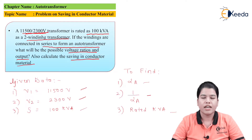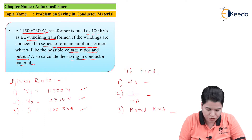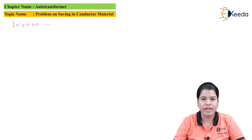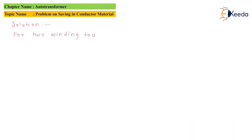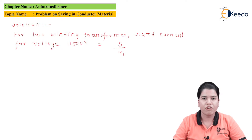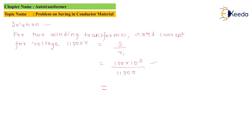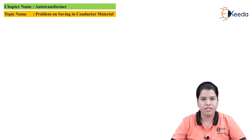The transformer operating 11,500 by 2,300 volt is initially used as the two winding transformer. Let us find the rated primary current. The formula for the primary winding current is I1 is equal to S divided by V1. Substituting the values we get 100 into 10 raised to 3 divided by 11,500, giving I1 equal to 8.69 ampere.